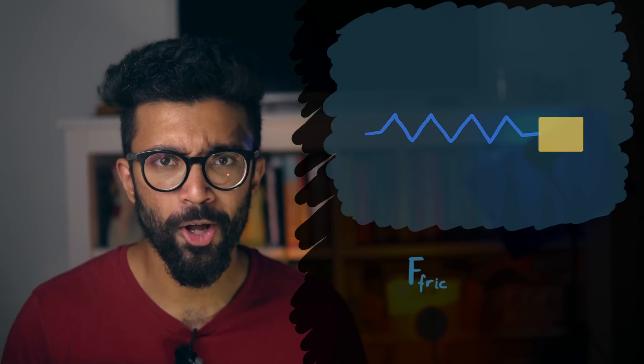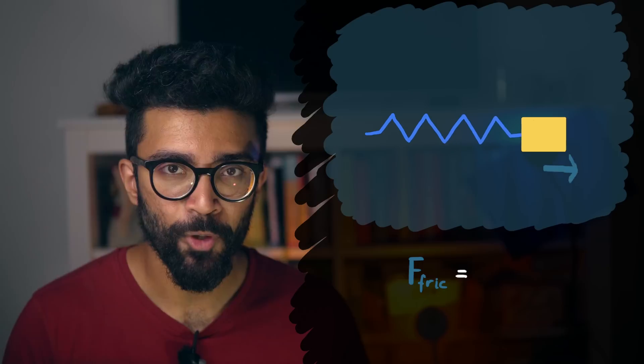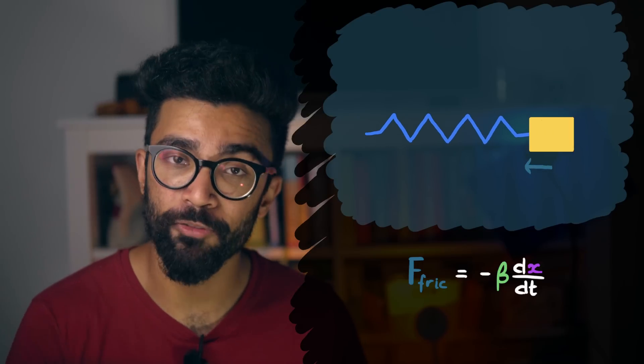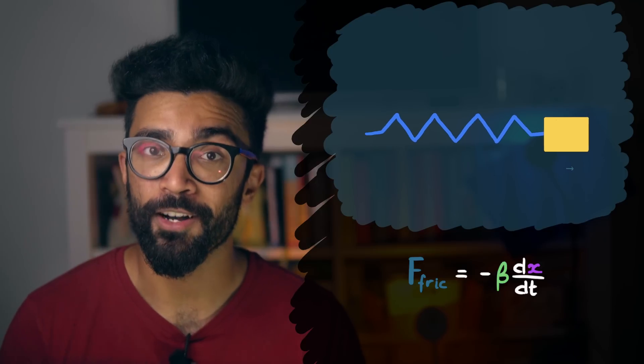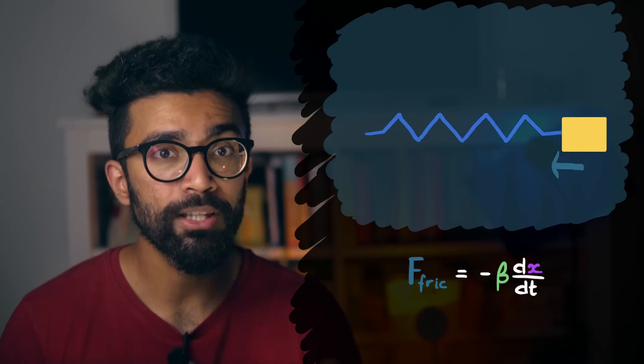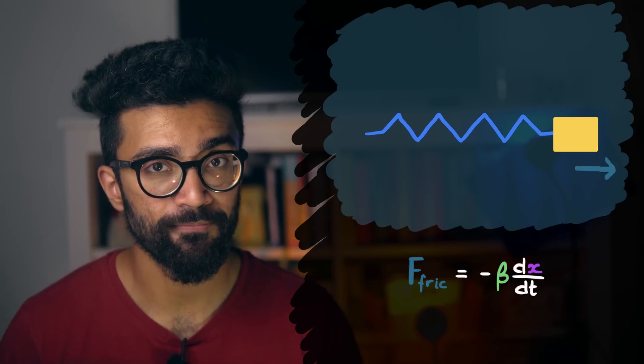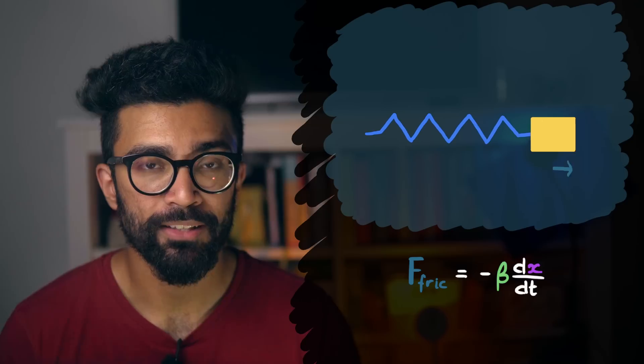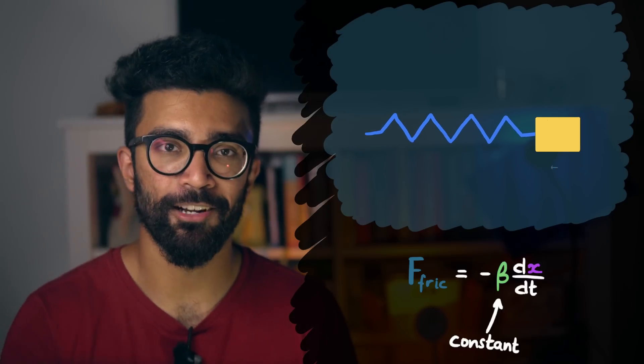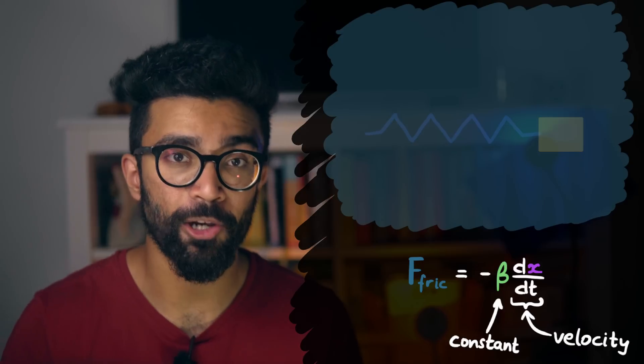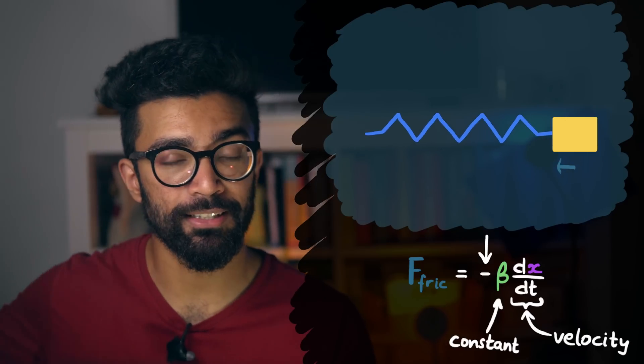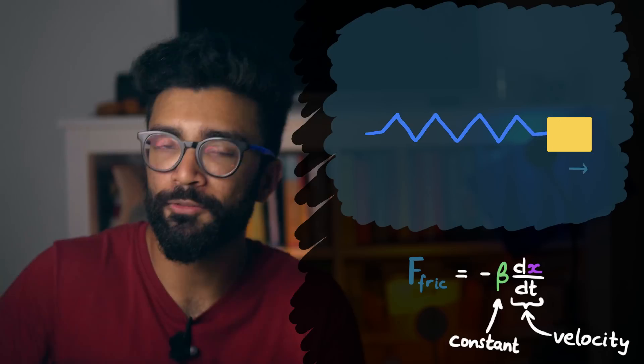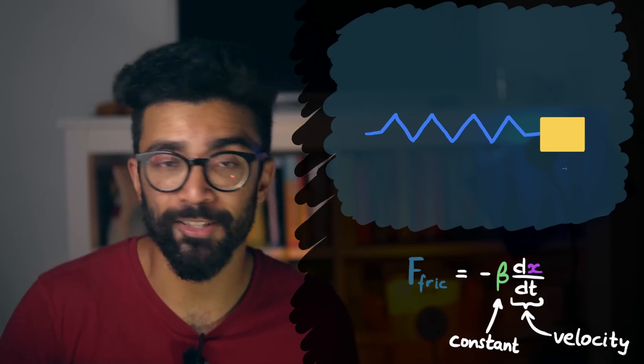The force exerted on the block depends directly on how fast the block is moving at any point of time through our liquid. In other words, the faster the block moves, the more the liquid resists its motion. In other words then, we can say that the frictional force is directly proportional to the velocity of the block. But once again, it acts in the opposite direction to the motion. Because of course, friction resists motion. That's the point of friction.